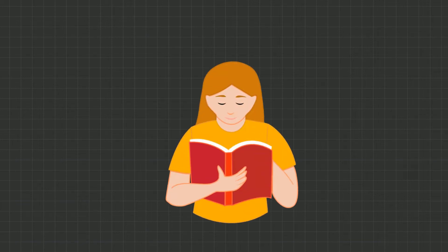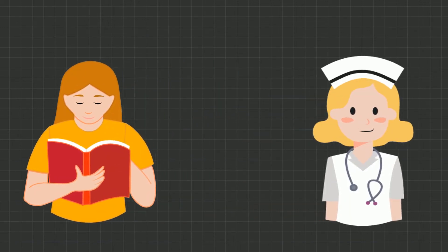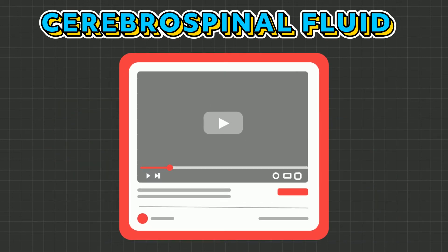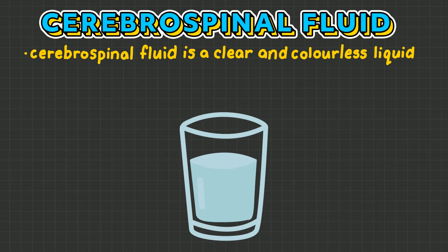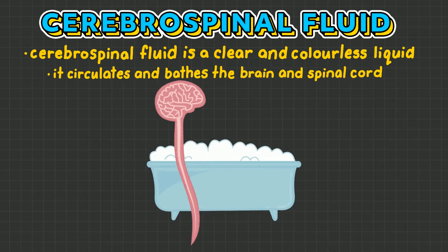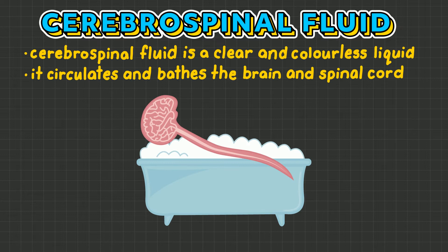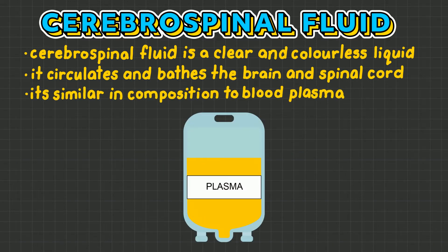If you want to learn everything you need to know, as a nurse, about cerebrospinal fluid, then this is the video for you. Cerebrospinal fluid is a clear and colorless liquid found in the central nervous system. It circulates and bathes the brain and spinal cord and is similar in composition to blood plasma.